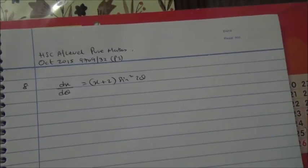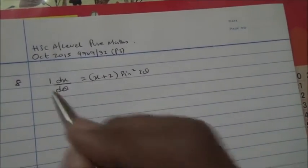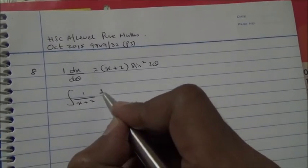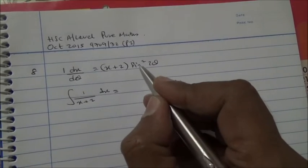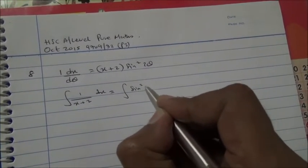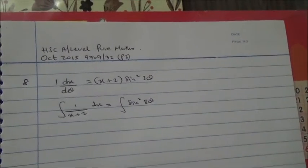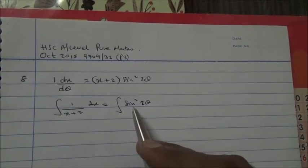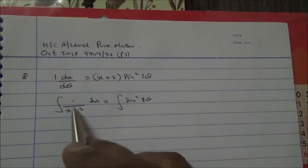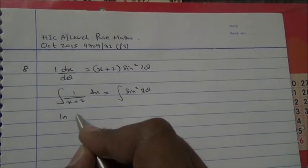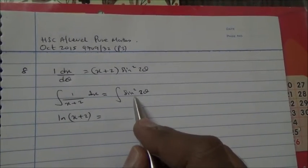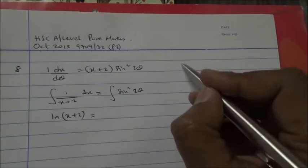To solve a question like this, we're going to have to separate the variables. So it's going to be the integral of 1 over x plus 2 with respect to x equals the integral of sine squared 2 theta. Now this is pretty straightforward. The integral of 1 over x plus 2 is ln x plus 2 equals the integral of sine squared 2 theta. Now this is a bit problematic.